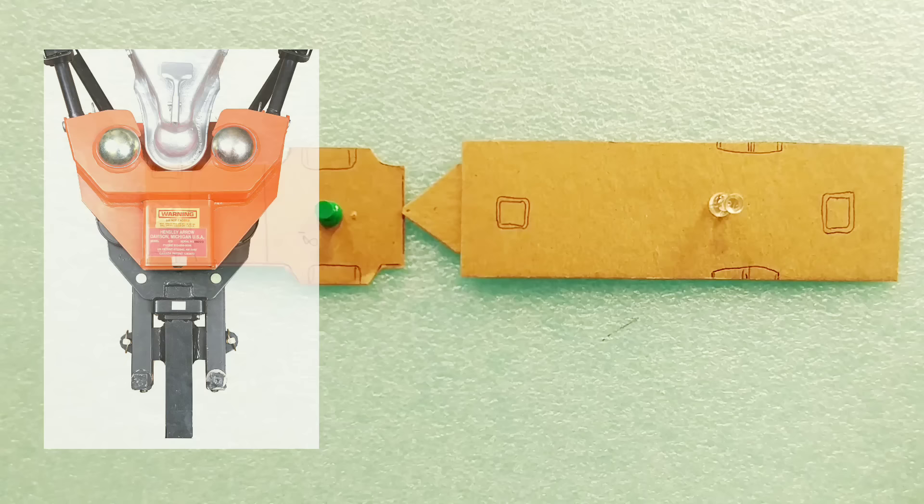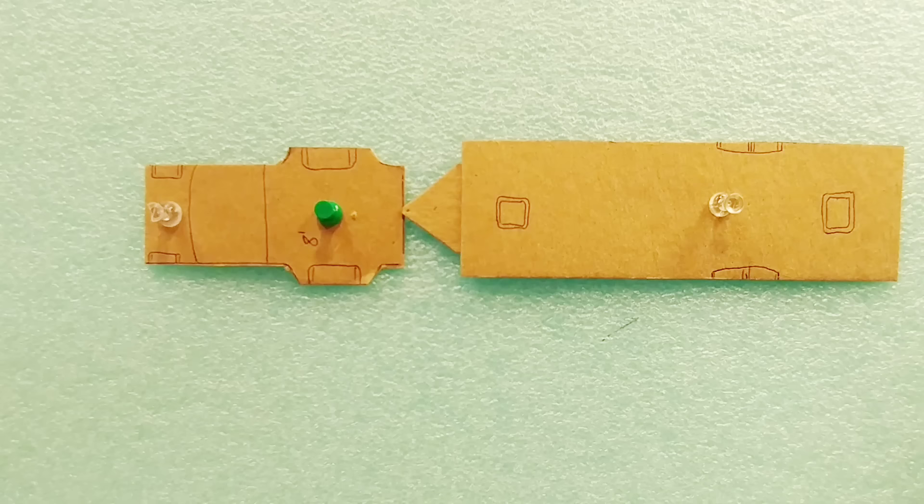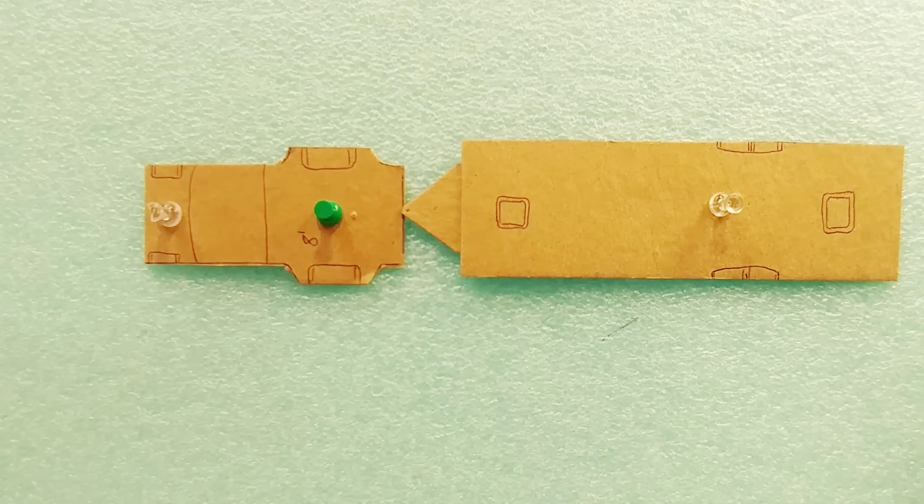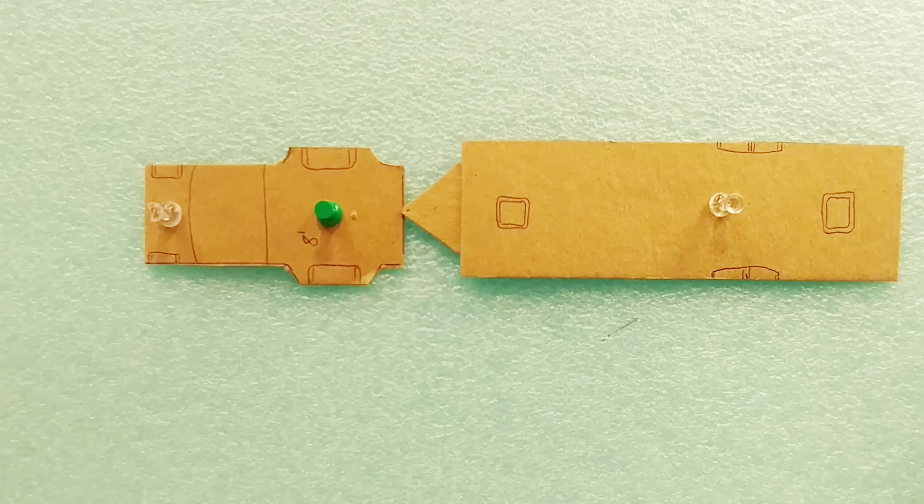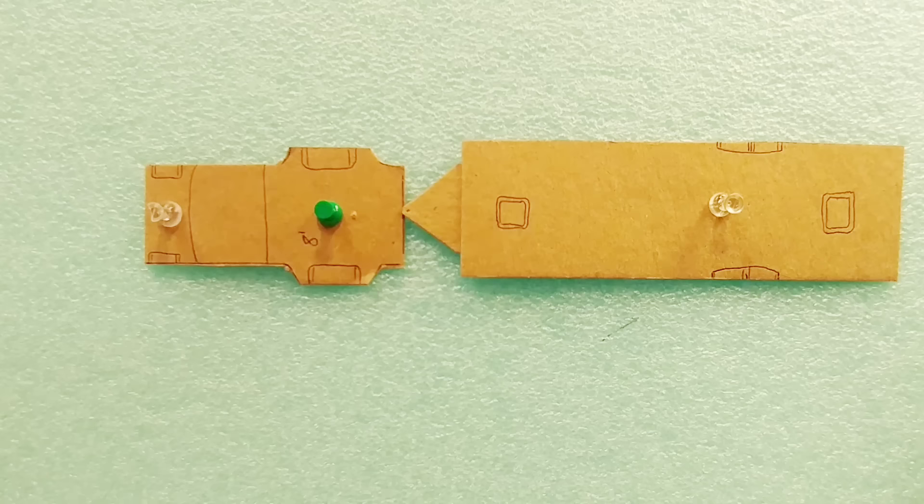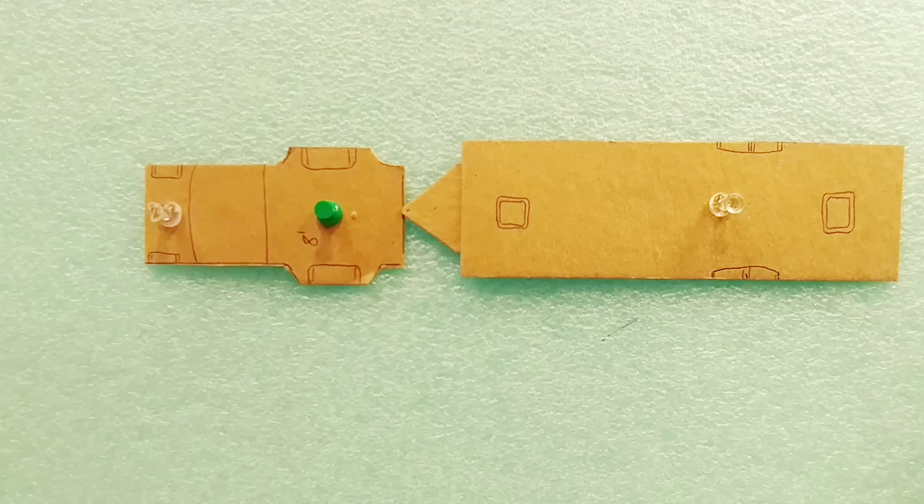So the best ways you can naturally control sway are either going to a very expensive hitch like a Hensley hitch which essentially eliminates sway. It adds a lot of weight to the back of your truck and a lot of weight to the tongue of your trailer so you have to make sure you have the payload capacity to support such a hitch. Towing with a fifth wheel will almost always eliminate sway as well as going with a very high quality weight distribution hitch but more importantly making sure that your weight distribution system along with sway control hitch is set up properly.